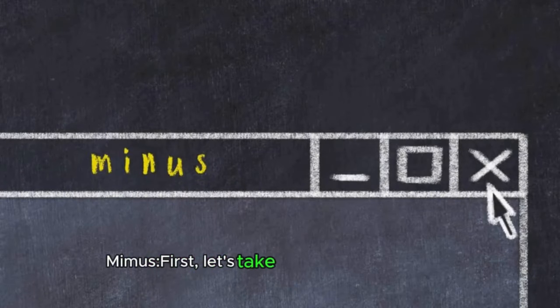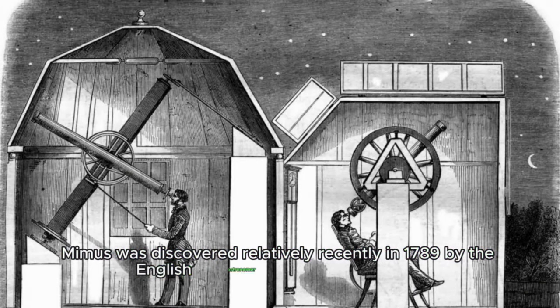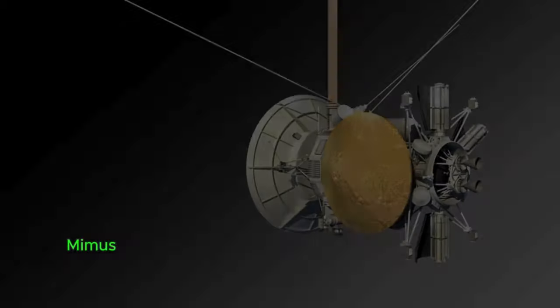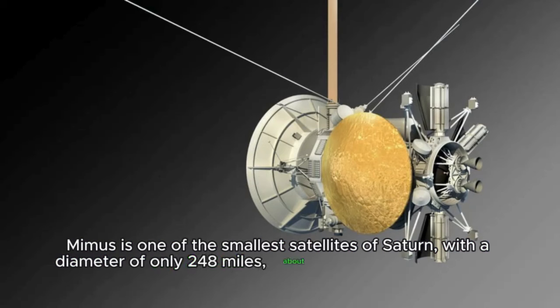First, let's take a closer look at Mimas. Mimas was discovered relatively recently, in 1789, by the English astronomer William Herschel. Mimas is one of the smallest satellites of Saturn, with a diameter of only 248 miles, about one-fourth or a quarter of our moon.